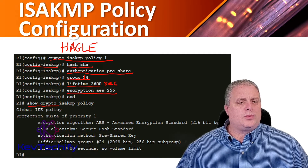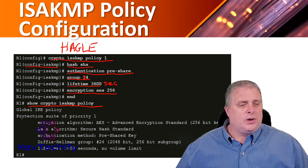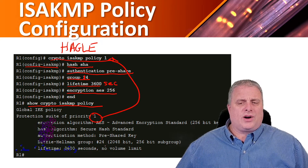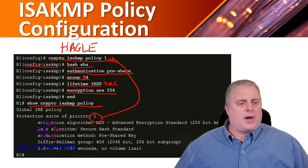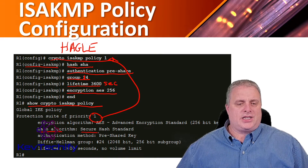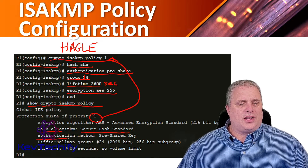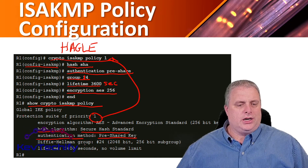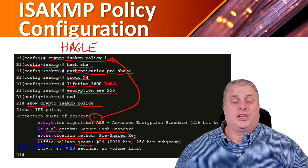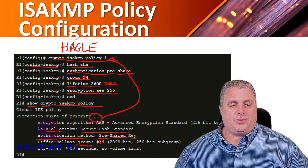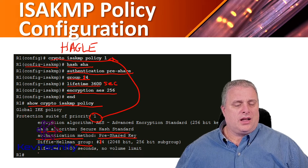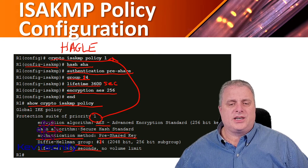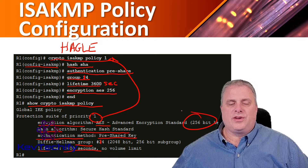Once we have all our security associations entered, we type in the show crypto ISAKMP policy command, which lists out our ISAKMP policies. We can see it has a priority of one — the number we set. Working through our mnemonic: hash algorithm is SHA (Secure Hash Standard); authentication is pre-shared key; Diffie-Hellman group is 14; lifetime is 3,600 seconds; and encryption algorithm is AES at 256 bits.